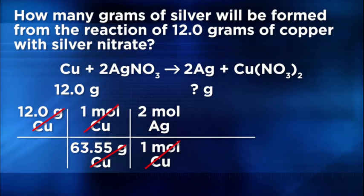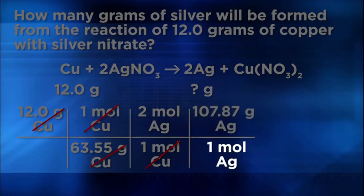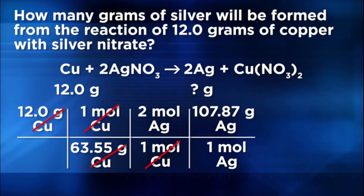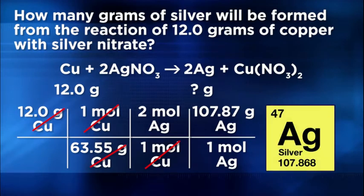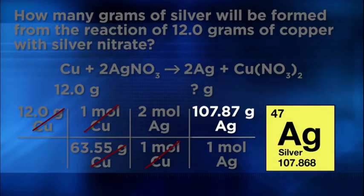Since this question asked for grams of silver as opposed to moles, we must continue with the conversion. So if we bring the units of moles of silver down to the denominator of the next column, we can use the molar mass of silver as a final conversion factor. One mole of silver has a mass of 107.87 grams. This conversion factor allows us to convert from moles of silver to grams of silver. Since this is the unit that the question asked for originally, then I finished the converting step of the problem.